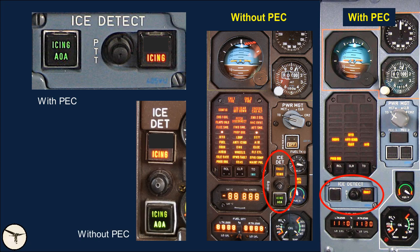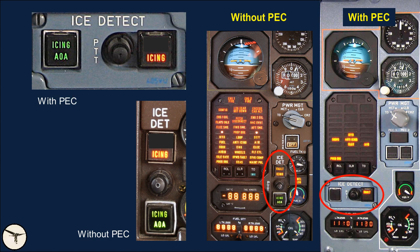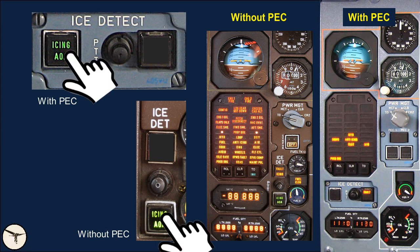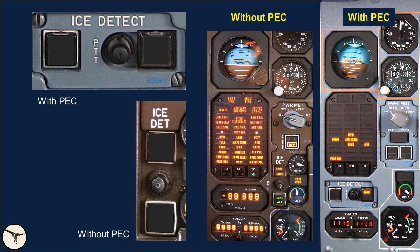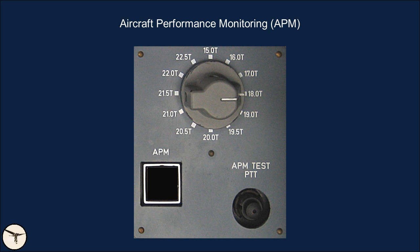The ice detection system has an ice detection light, a test push button, and a green icing AOA light that illuminates when the anti-icing systems have been selected on. The icing AOA light indicates that the stall warning system will be triggered at a lesser angle of attack than normal, compensating for adverse aerodynamic effects ice can have on the wings. The icing AOA light is extinguished by pressing the push button, but only when the anti-icing systems have been selected off. To the right of the first officer's flight instruments is a panel for the APM, the aircraft performance monitoring system, which is part of the ice protection system. However, some older ATRs may not have the APM.